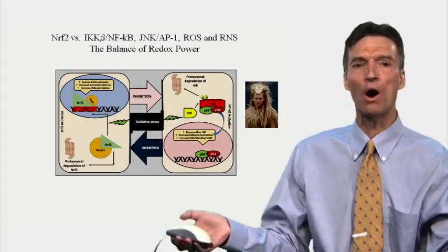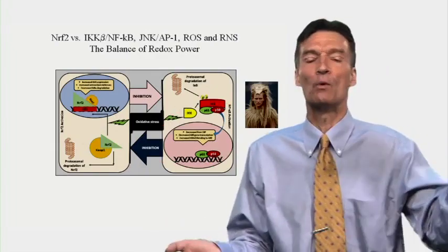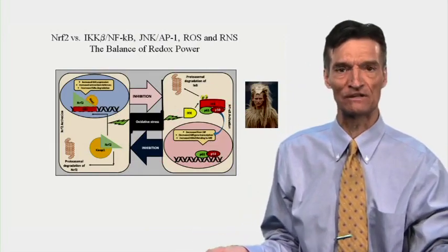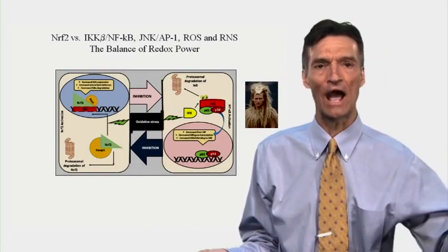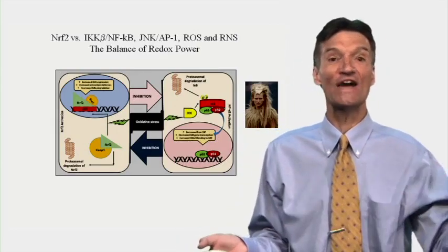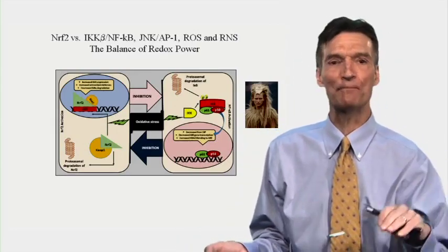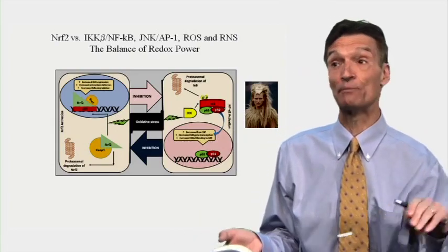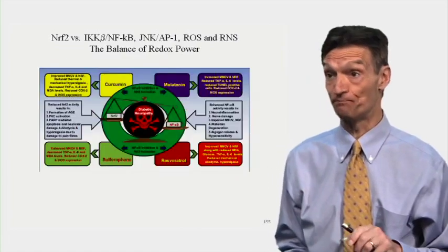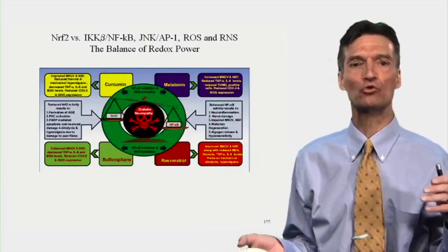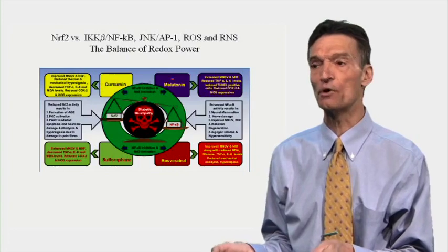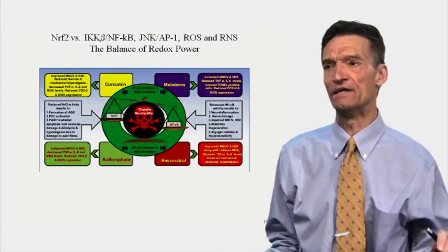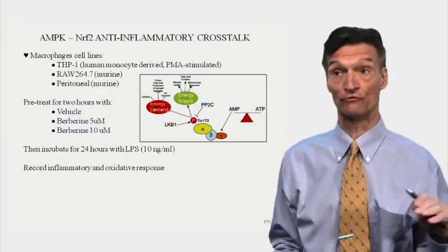It's a balance of powers — we want to be able to fight infection, but also quiet it down. Berberine doesn't prevent us from fighting infection, but it will quiet it down, so you have less collateral damage when you're fighting bacteria. Through this same pathway you're protecting against toxins, chemotherapy, ischemia-reperfusion injury, and hyperglycemia. Agents that translocate Nrf2 — curcumin, melatonin, resveratrol, sulforaphane, berberine — are beneficial in dealing with diabetic neuropathy via Nrf2.